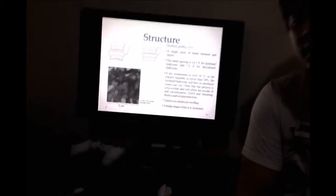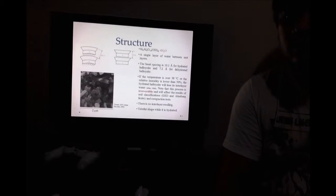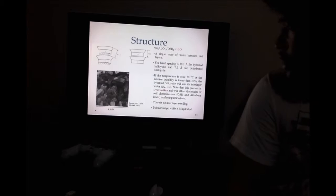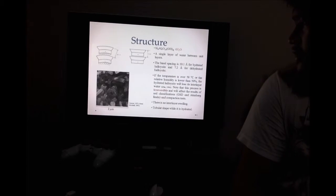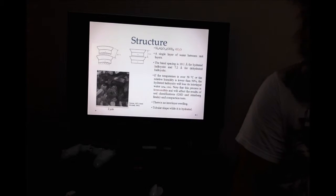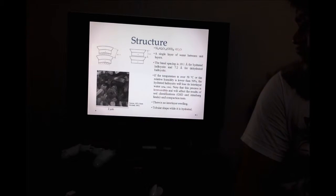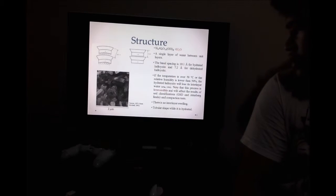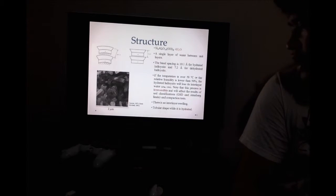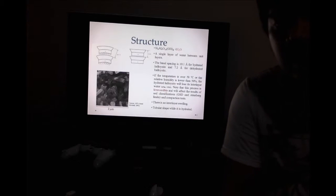The chemical formula of Halloysite nanotubes — the basal spacing is 10.1 Å for hydrated Halloysite and 7.2 Å for dehydrated Halloysite. If the temperature is over 50 degrees Celsius or the relative humidity is lower than 50%, the hydrated Halloysite will lose its interlayer water. This process is irreversible and will affect the results of soil classification. There is also no interlayer swelling in Halloysite nanotubes.